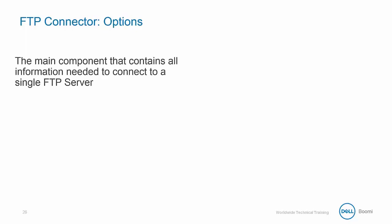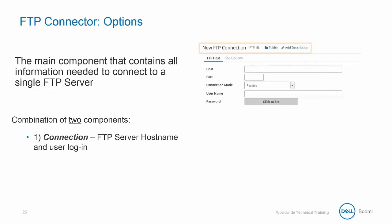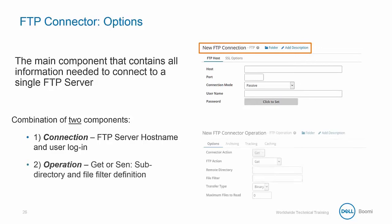The FTP connector is the main component containing all information needed to connect to a single FTP server. Like any connector, it's a combination of two components. First we have the connection, or the 'where,' which is the FTP server hostname and user login.